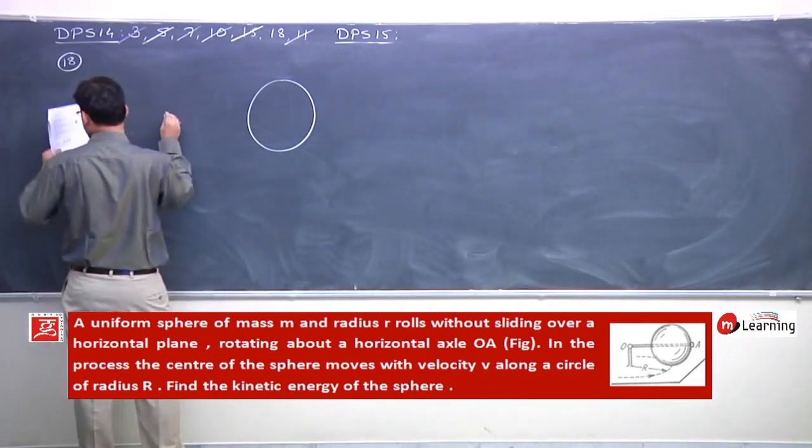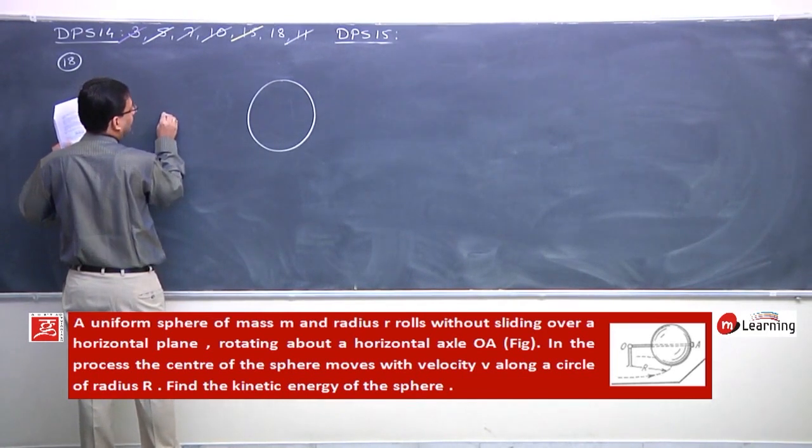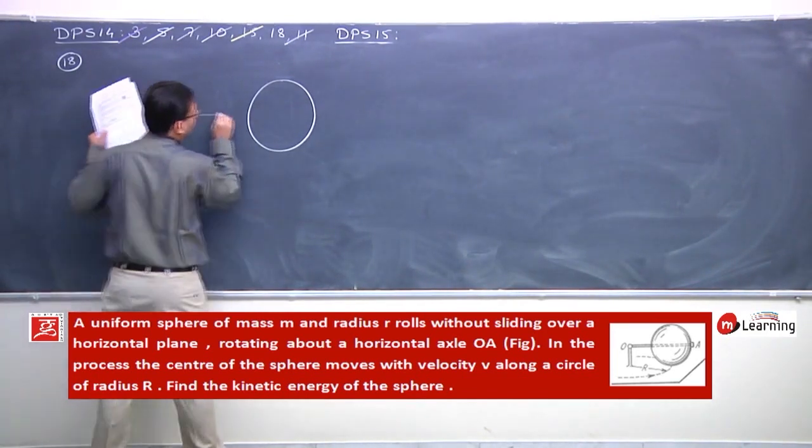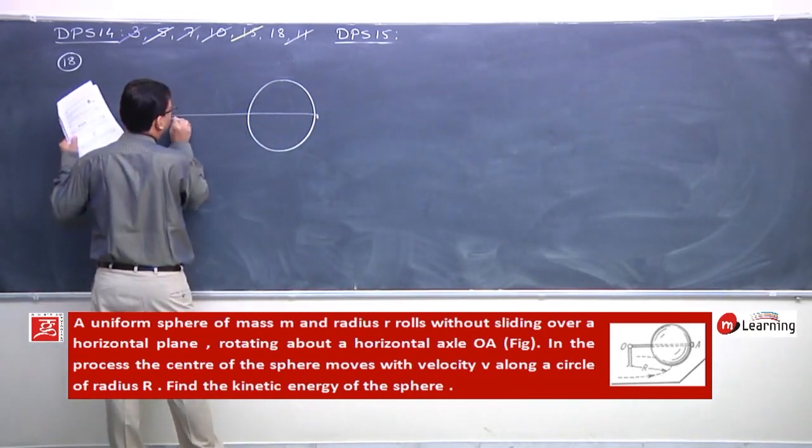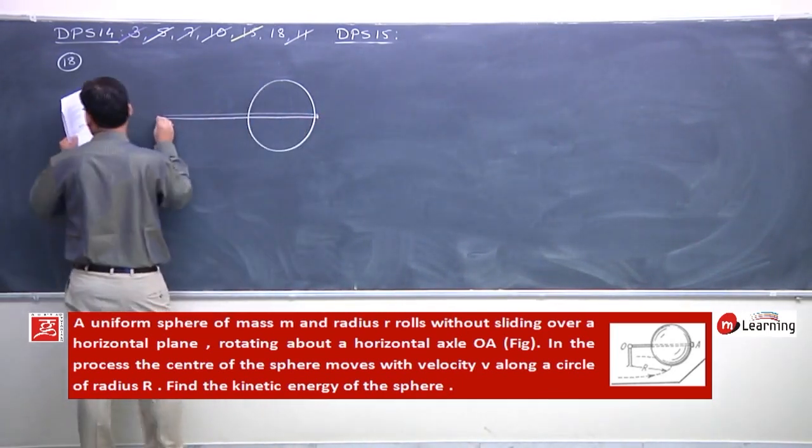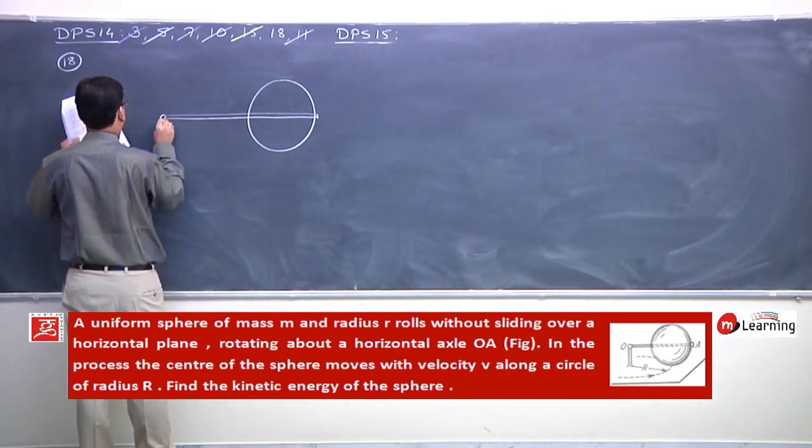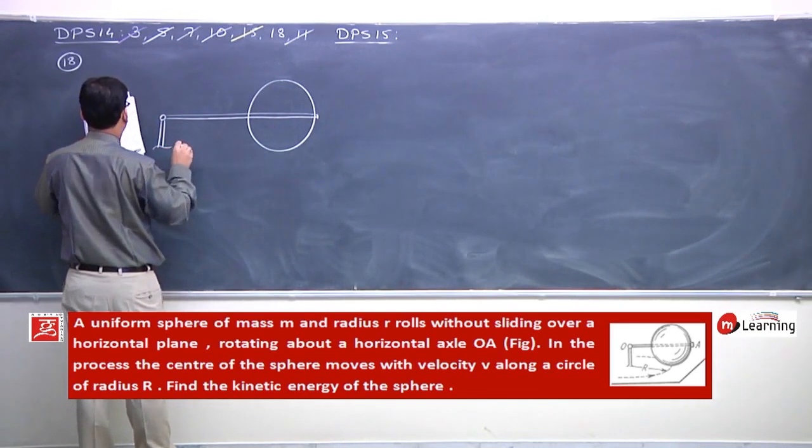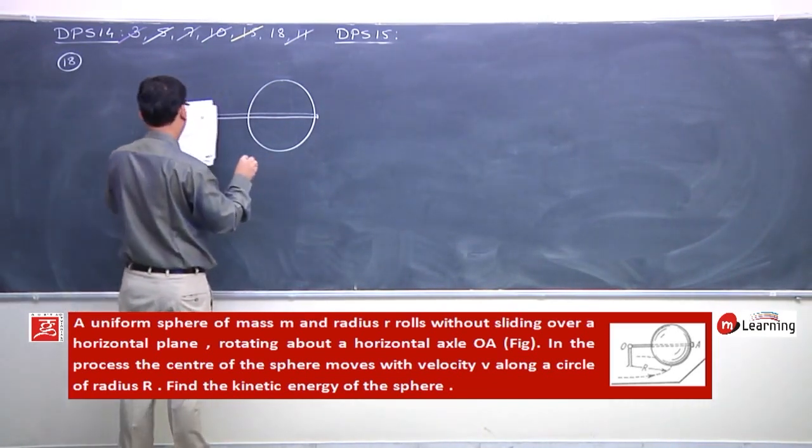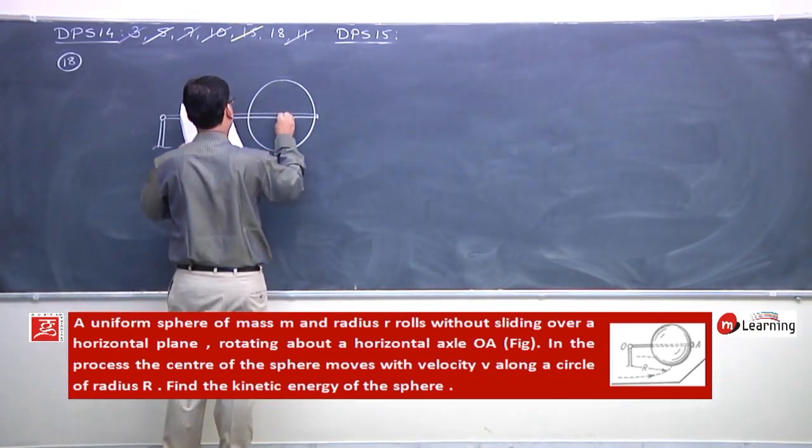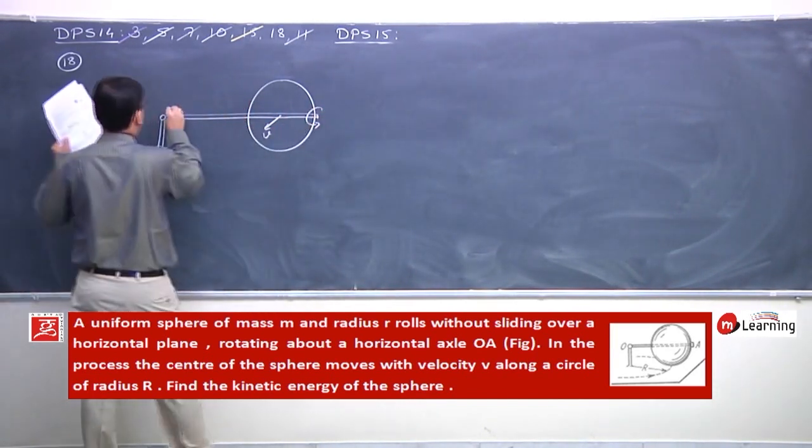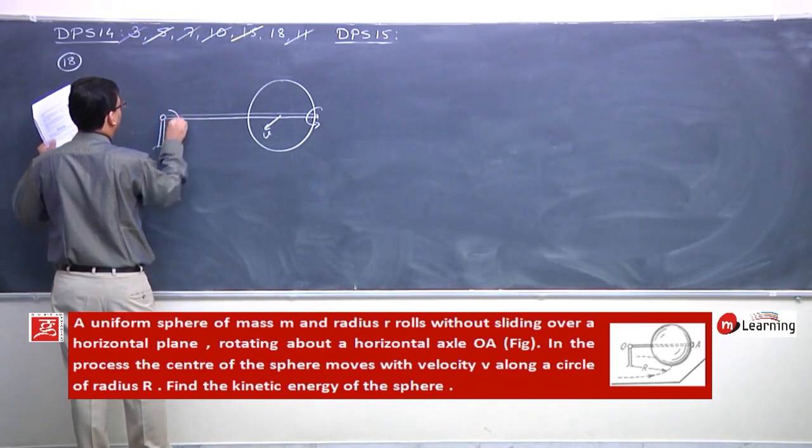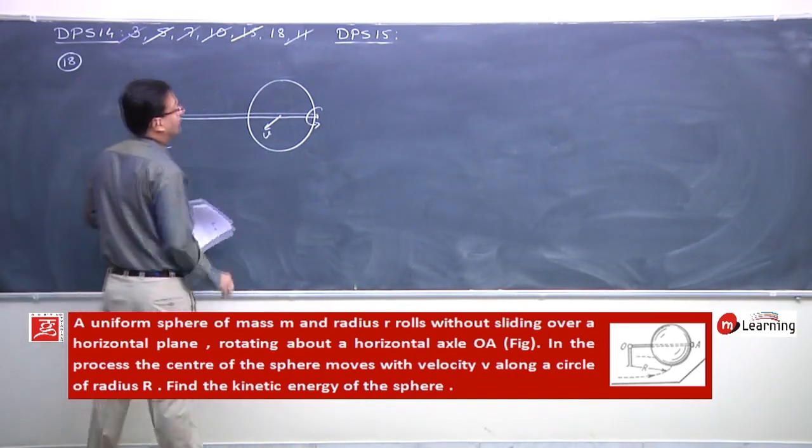Find the kinetic energy. Let's understand the situation. We are able to understand the axle is outside the sphere. This is the axle. It must be about the axle on the ground.